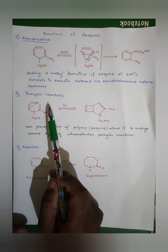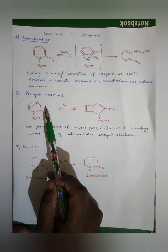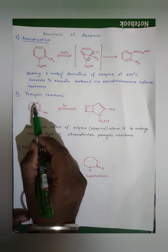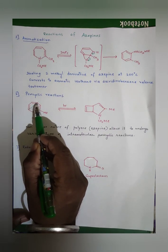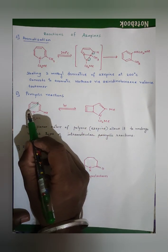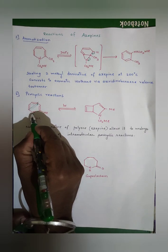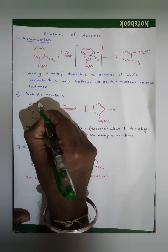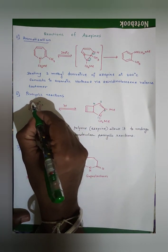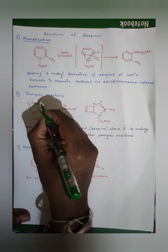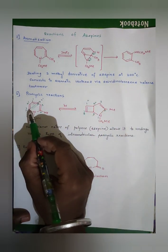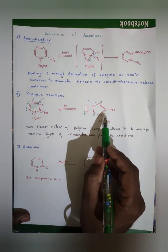Azepines also show various pericyclic reactions — ring closure and ring opening reactions. A double bond shifts, another bond shifts, and a four-membered ring is formed in a ring closure reaction. This gives a bicyclic-type structure where atoms 1, 2, 3, and 4 form the new ring while the rest of the molecule remains.